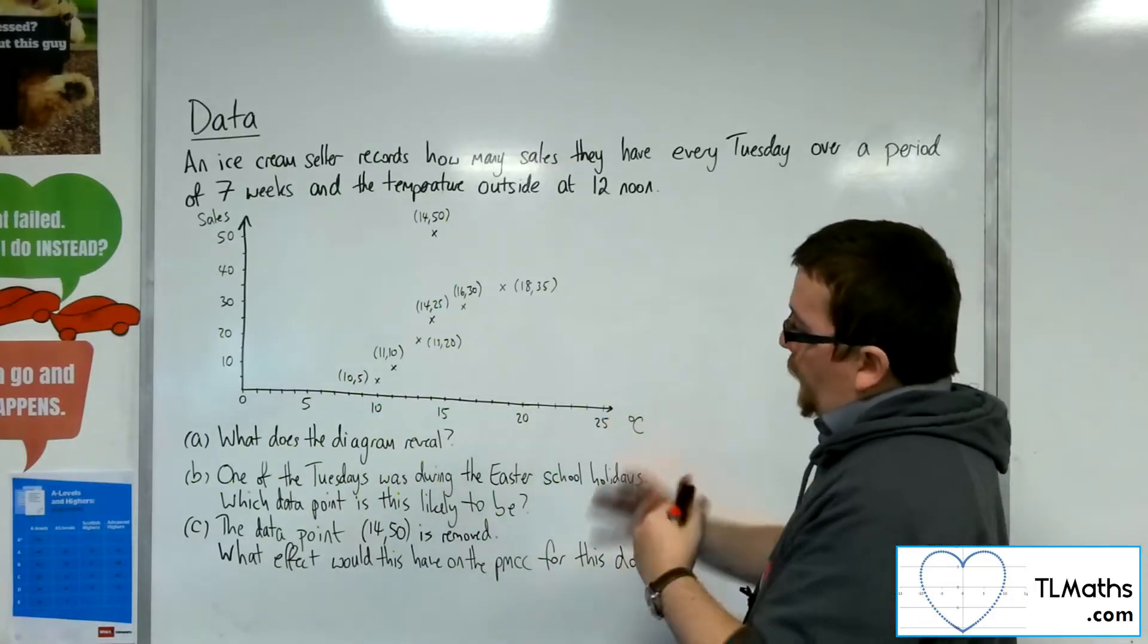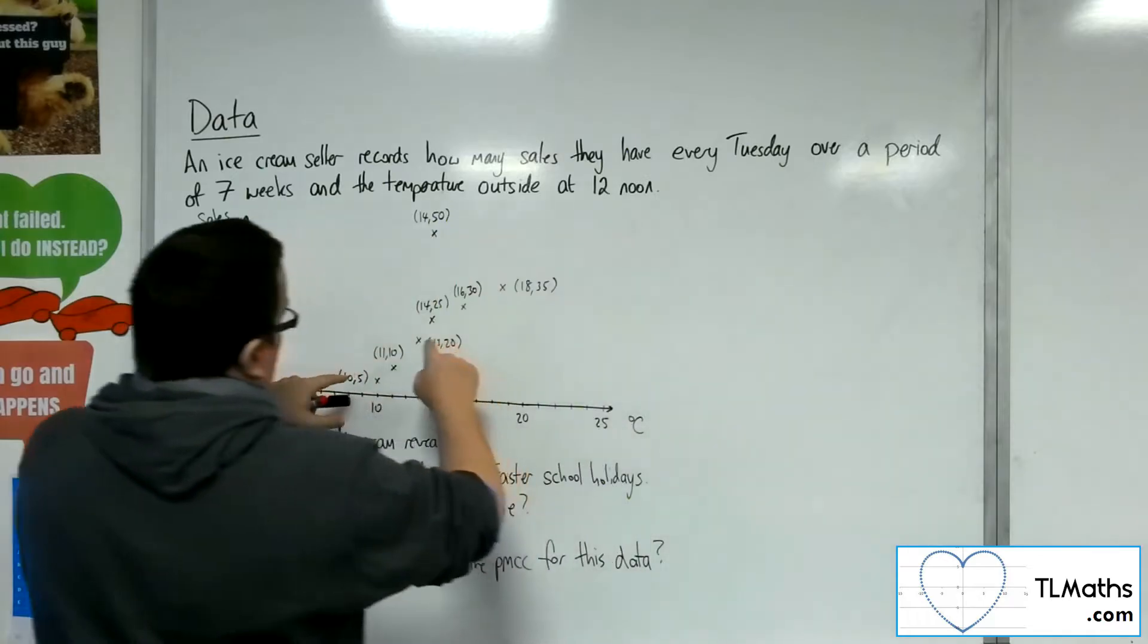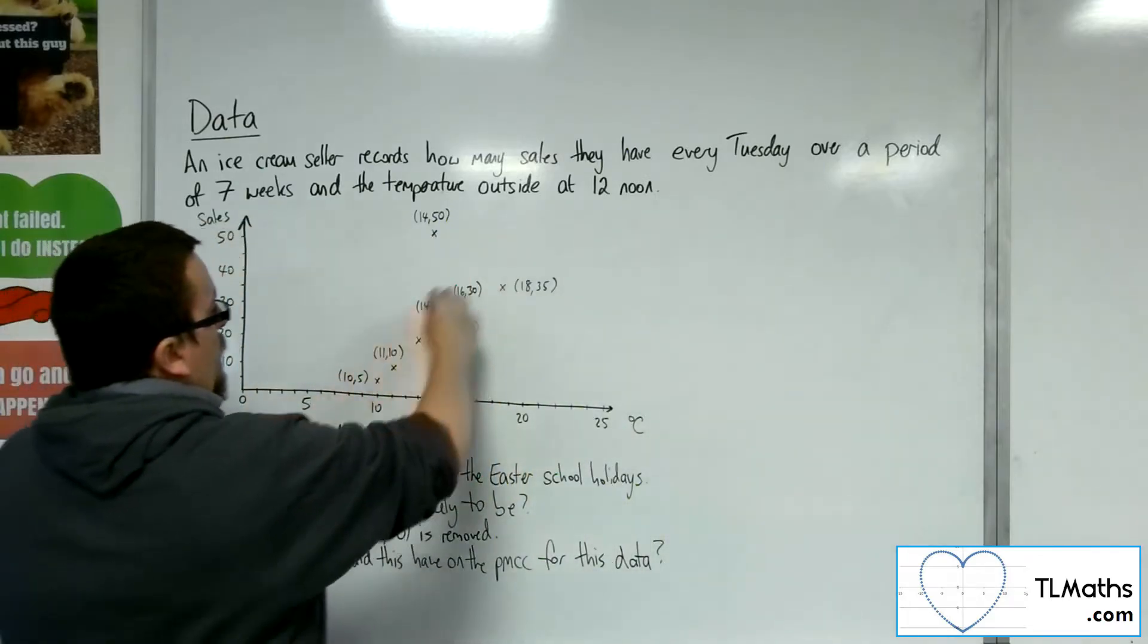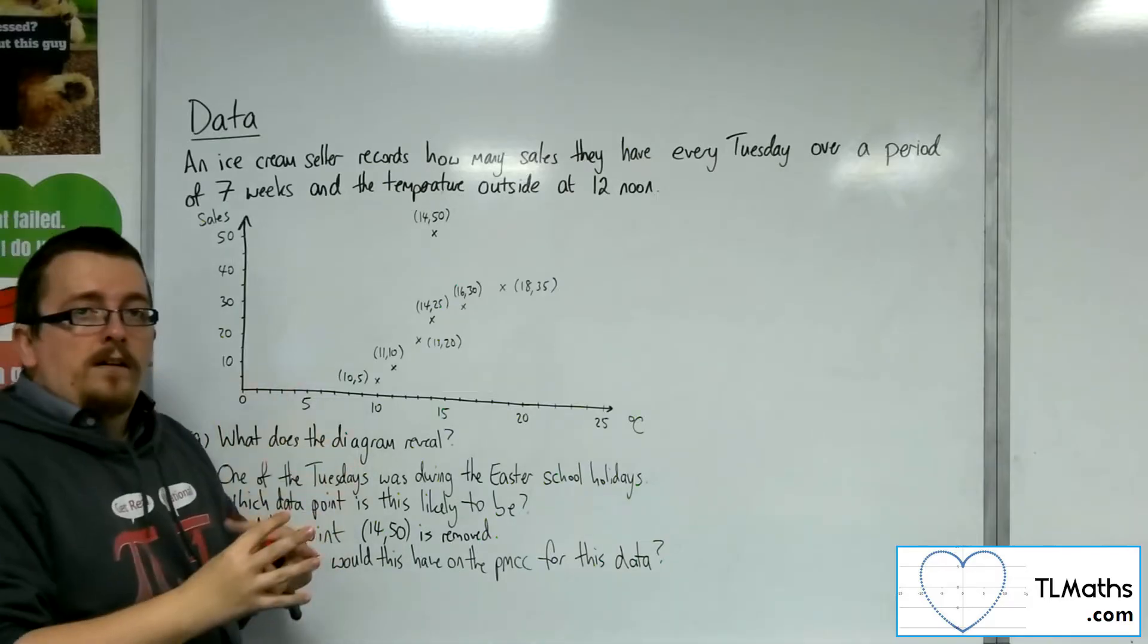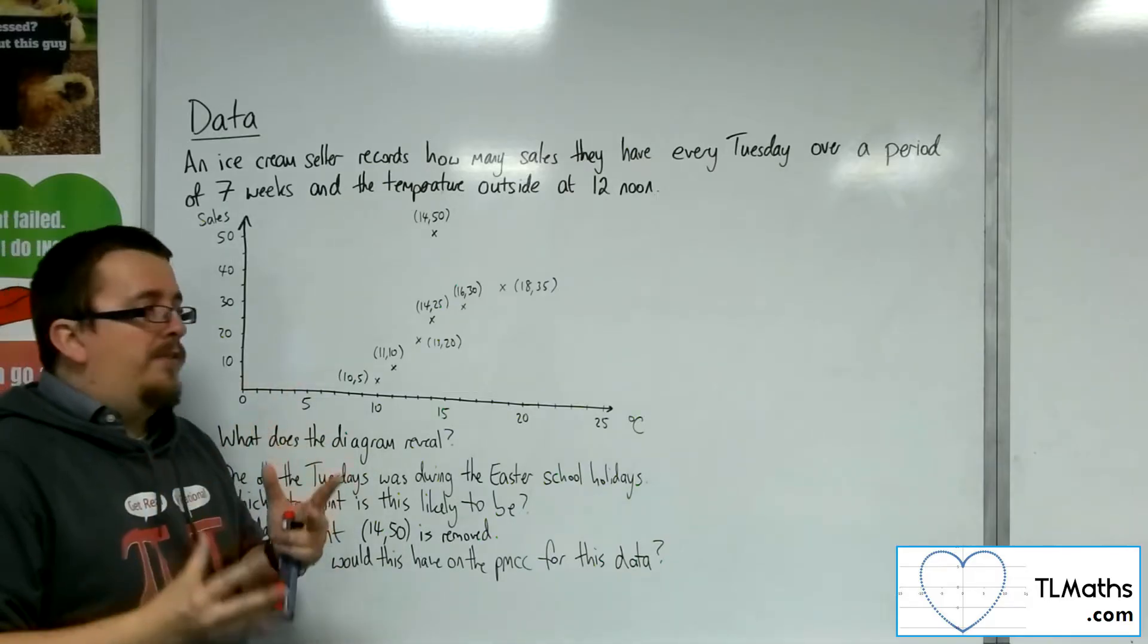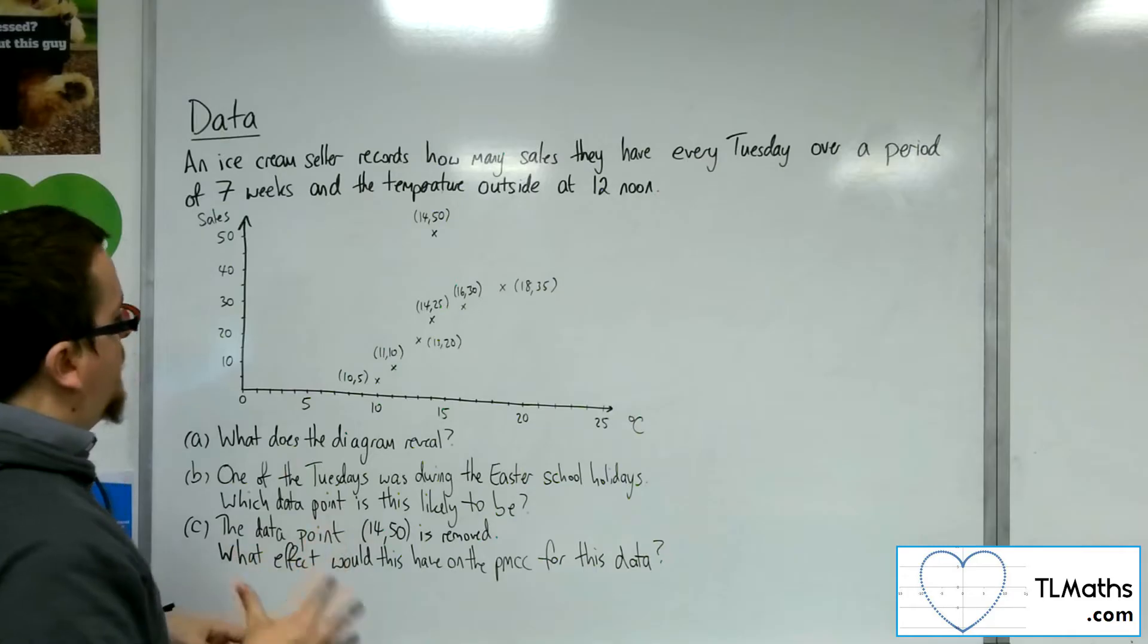Okay, so it looks like, seeing as we're going from the bottom left to the top right, that there is some linear correlation, positive correlation, going with this data.